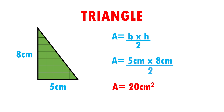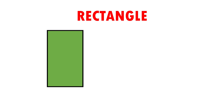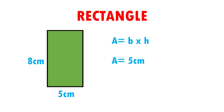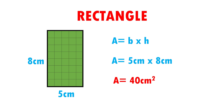Let's see another example. Here I have a rectangle with measures of 5 base and 8 height. The formula to calculate the area of a rectangle is base times height. We are going to substitute data. Area is equal to 5 cm from the base times 8 cm height. Therefore, 5 times 8 gives me 40 cm squared as a result.